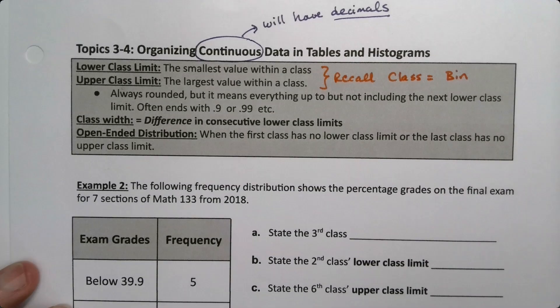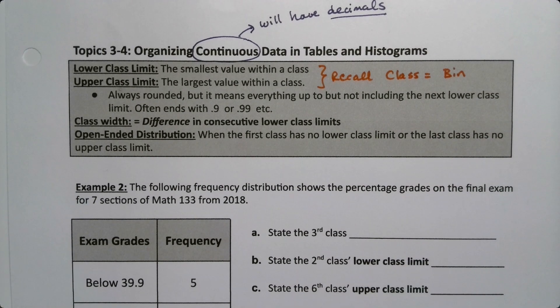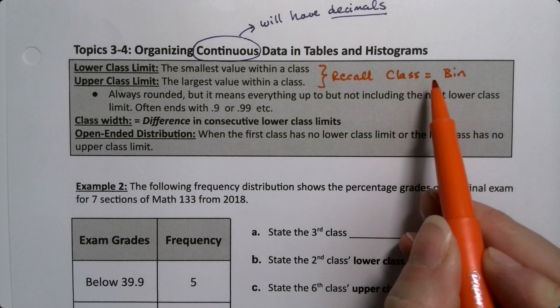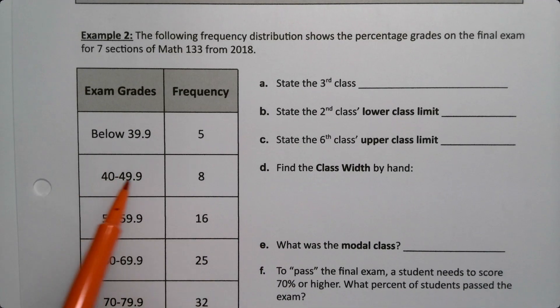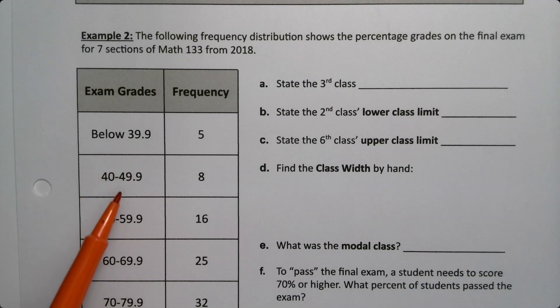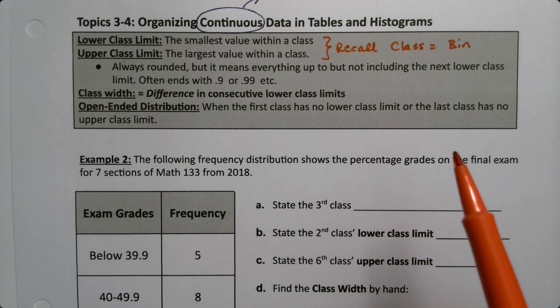Some technologies call them bins, some books call them bins. The bins are the organizational areas in which we're putting our numbers. These are classes or bins down here in this example.